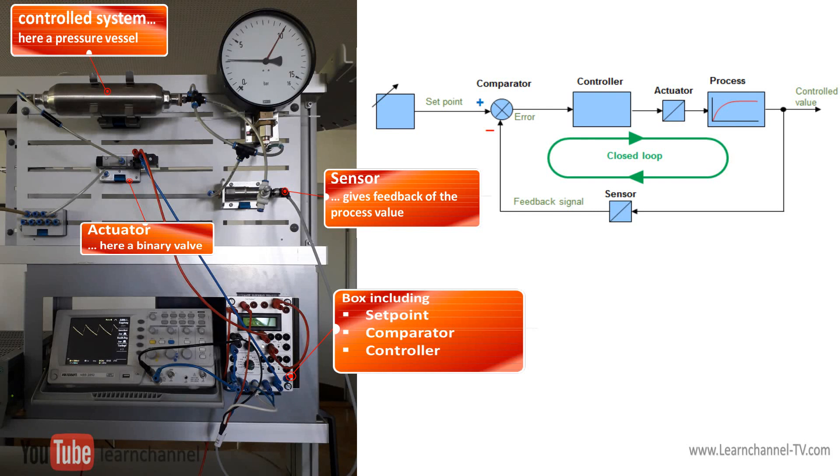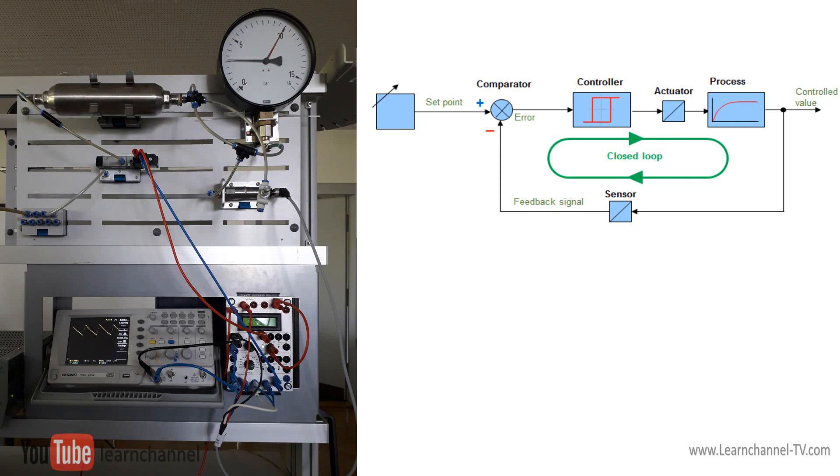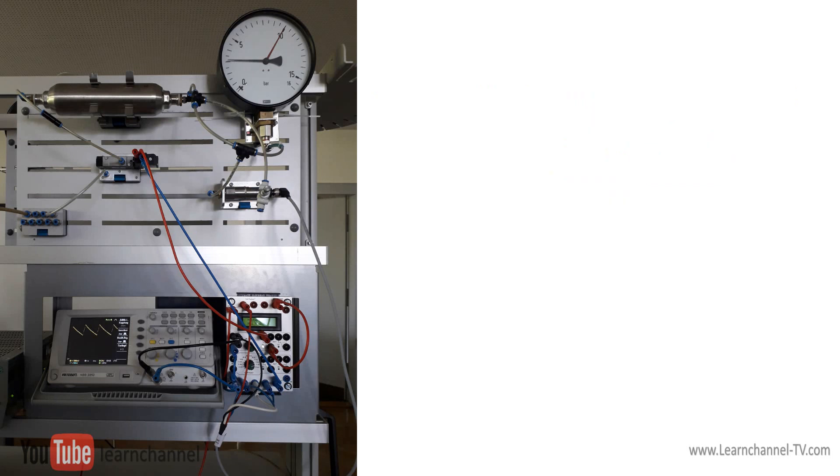Depending on the value of this difference or error, the controller generates an output signal, here on and off, to eliminate the error. Because the controller, with its electric output signal, cannot switch the process variable itself, an actuator is needed. Here, our experimental setup serves a binary valve.